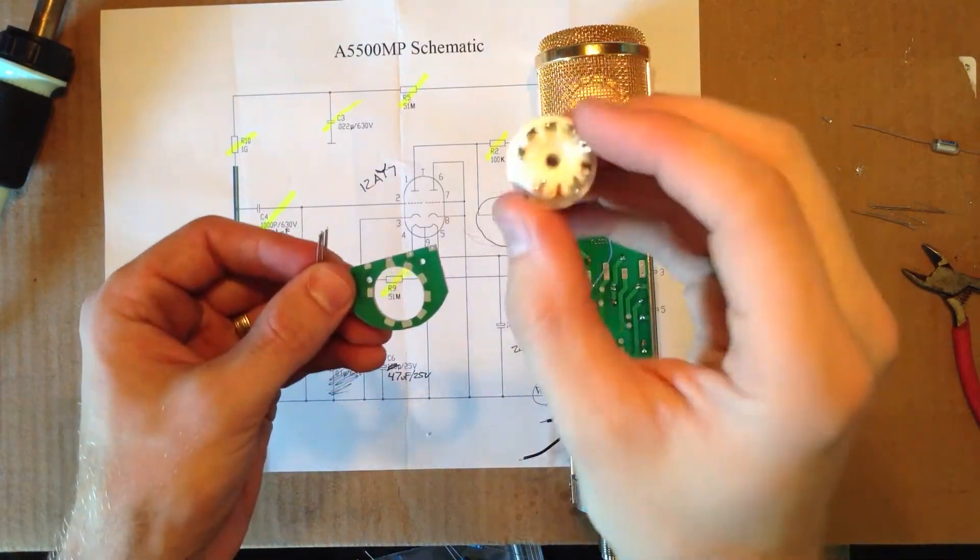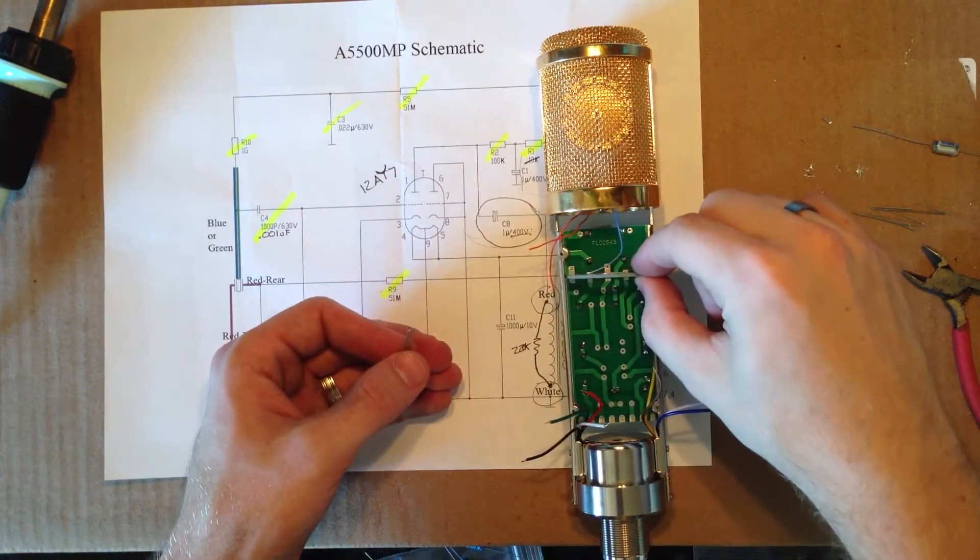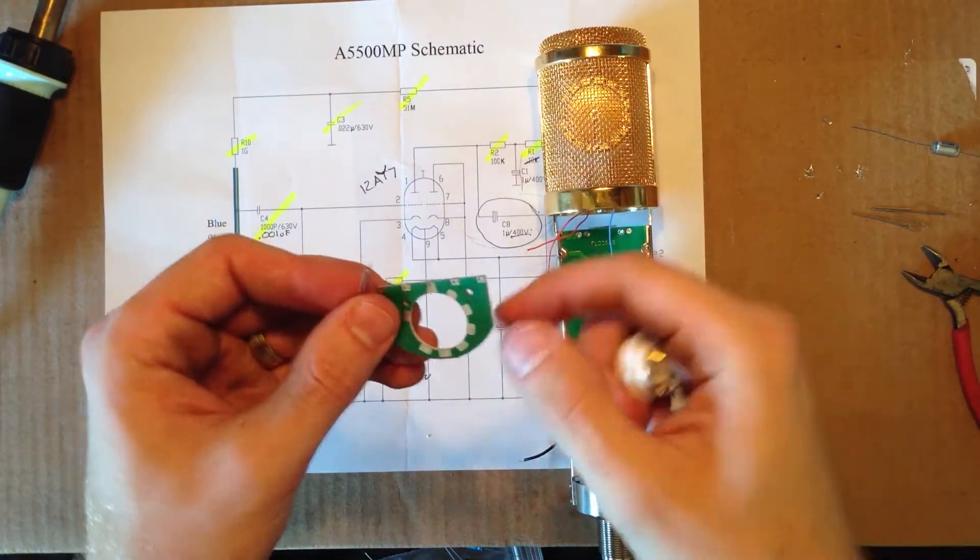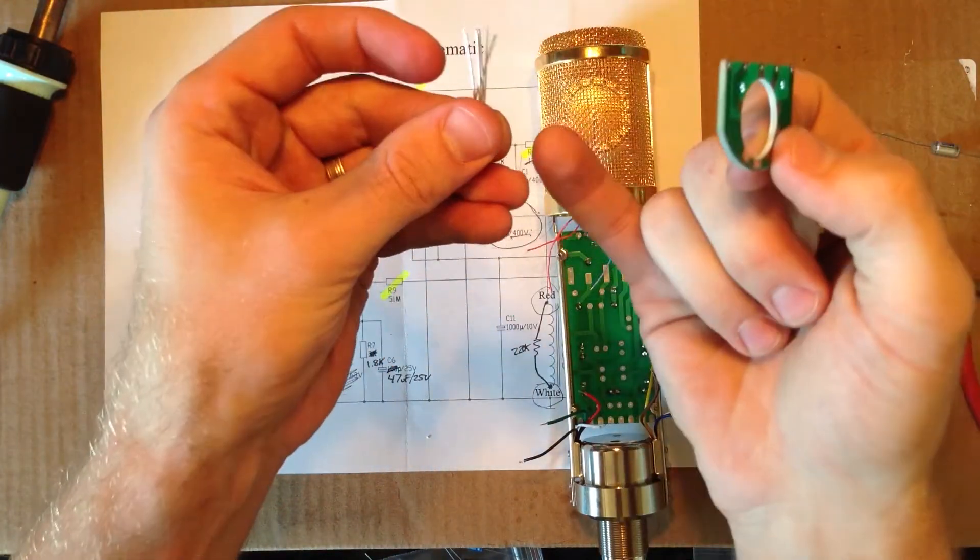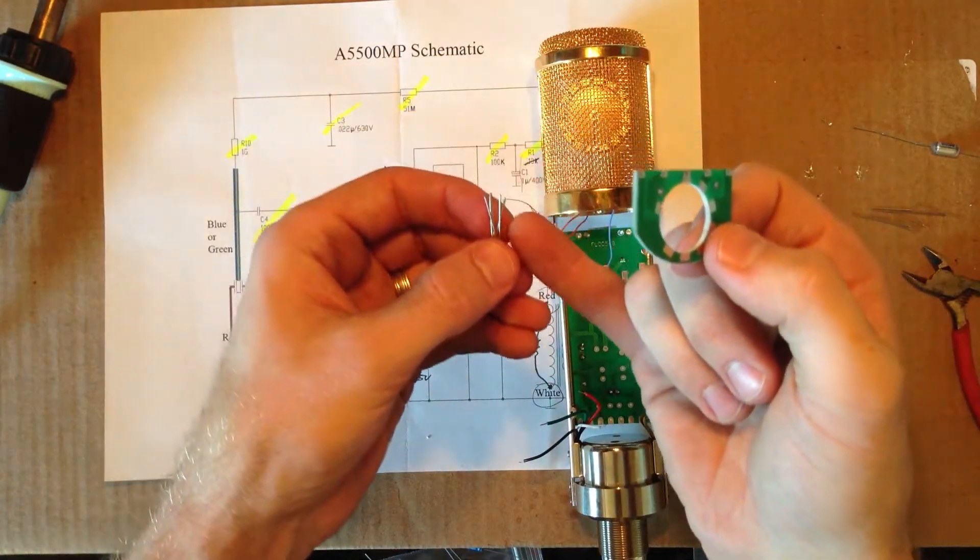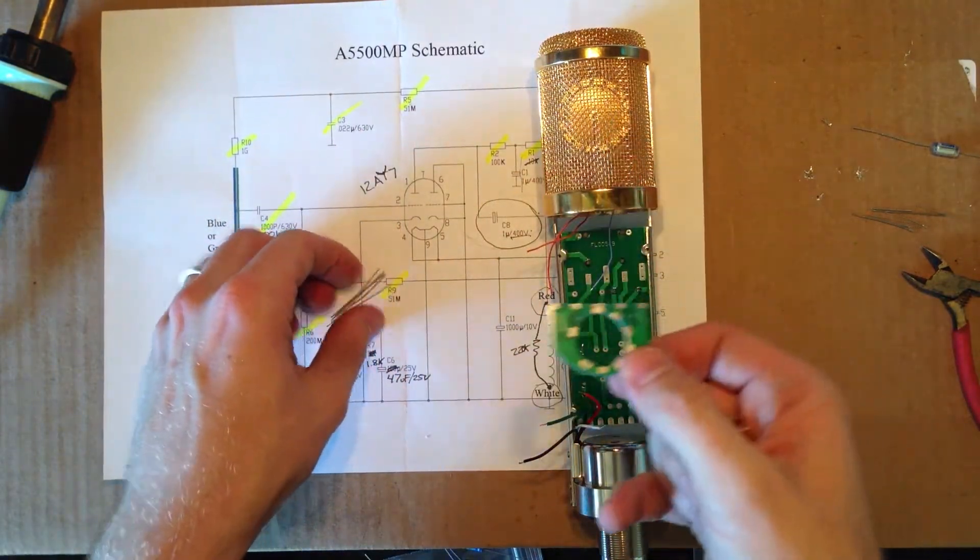We have our tube socket here and our tube plate here that goes and mounts right here in the microphone. Now there's holes here and so what I'm going to do is take some leads off of some components that I cut off, insert it through here and solder it on and then put it through those holes.